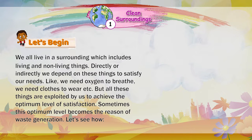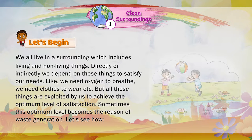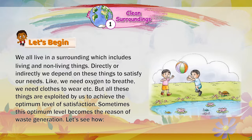We all live in a surrounding which includes living and non-living things. Directly or indirectly, we depend on these things to satisfy our needs. Like, we need oxygen to breathe, we need clothes to wear, etc. But all these things are exploited by us to achieve the optimum level of satisfaction.